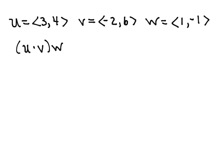In this example, we're given three vectors in component form. U is 3, 4, V is negative 2, 6, and W is 1, negative 1.